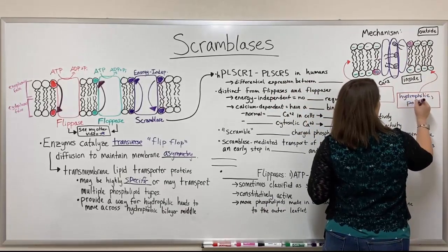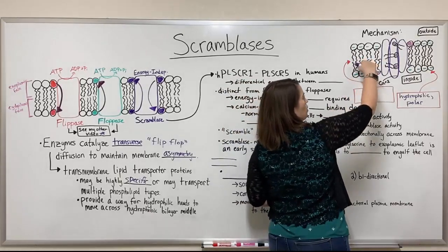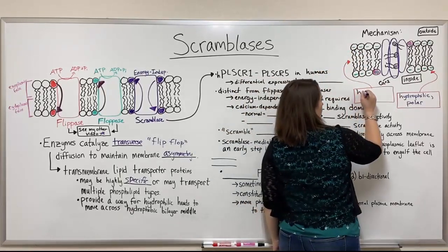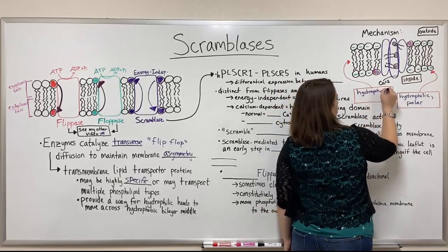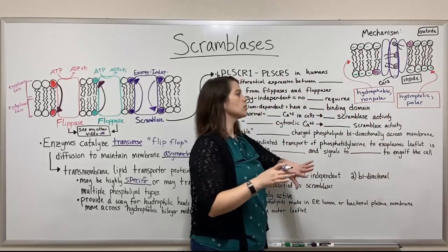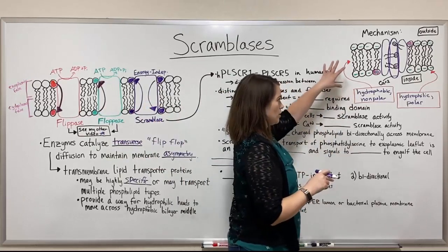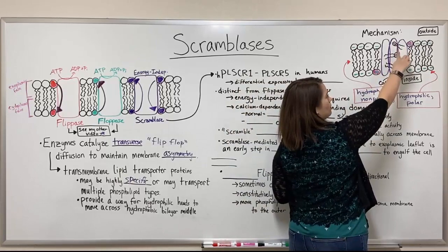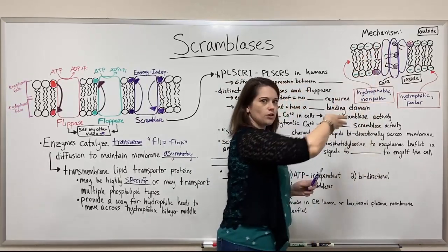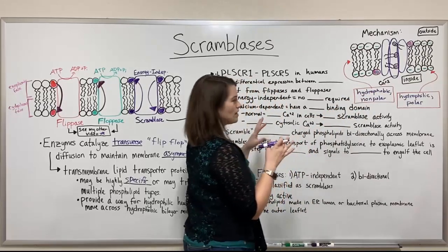These hydrophilic heads like to interact with water and other polar things. On the other hand, the fatty acid tails in the middle of the bilayer are very water-fearing — hydrophobic and nonpolar. Like water and oil, they don't mix, so thermodynamically crossing is not favored. Scramblases offer a way for these negatively charged phospholipid heads to flip-flop and transversely diffuse from one side to the other through that very hydrophobic nonpolar barrier.